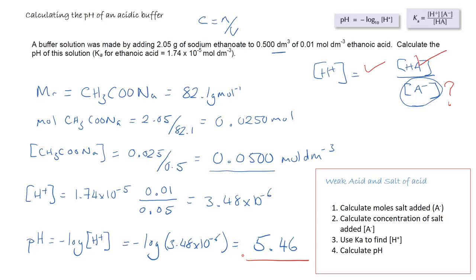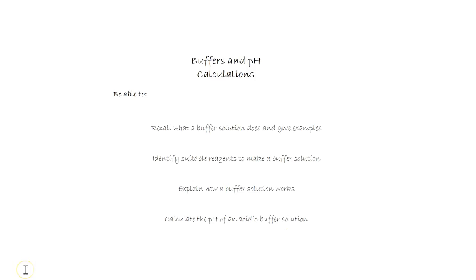You should now be able to work out acidic buffer pHs when adding a salt to the acid. If you look at the previous video — the link is provided — you should be able to find out how to do the weak acid with the strong base method. That's the end of the buffers and pH calculations video. By now you should be able to: recall what a buffer solution does and give examples, identify suitable reagents to make a buffer solution, explain how a buffer solution works, and finally calculate the pH of an acidic buffer solution.